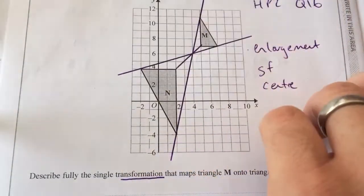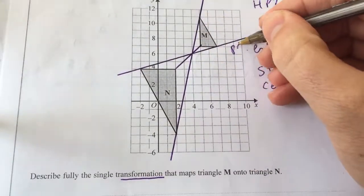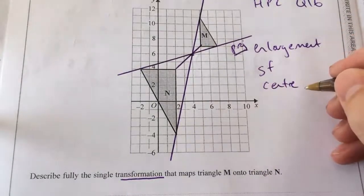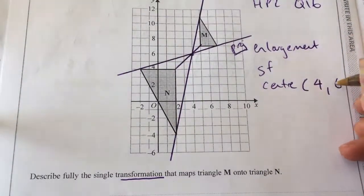So I've joined the respective points on these projection lines. And we can see that the center of enlargement there is 4 and 6.